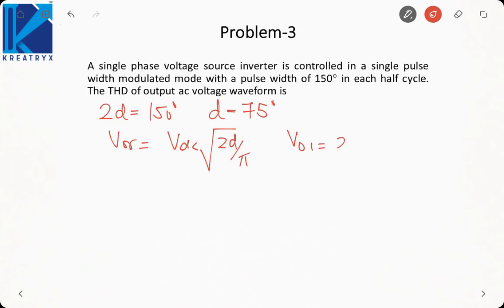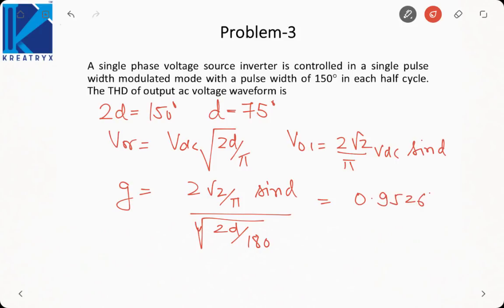We know that V0 RMS is VDC under root 2D by pi. And V01 will be 2 root 2 by pi VDC sin D. So that means distortion factor will be 2 root 2 by pi sin D divided by under root 2D by, if we take in degrees, 180. So this will come out to be the distortion factor. So it comes out to be 0.95264. Then if we calculate THD, it will actually be under root 1 by G square minus 1, which will come out to be 31.9%. So that will be the total harmonic distortion for a pulse width of 150 degrees.